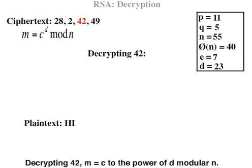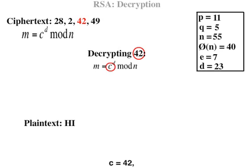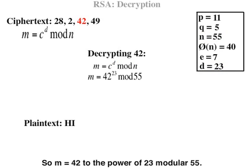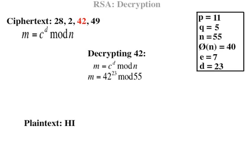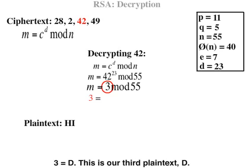Decrypting 42: M equals C to the power of D mod N, where C equals 42, D equals 23, N equals 55. So M equals 42 to the power of 23 mod 55. M equals 3 mod 55. 3 is D. This is our third plaintext: D.